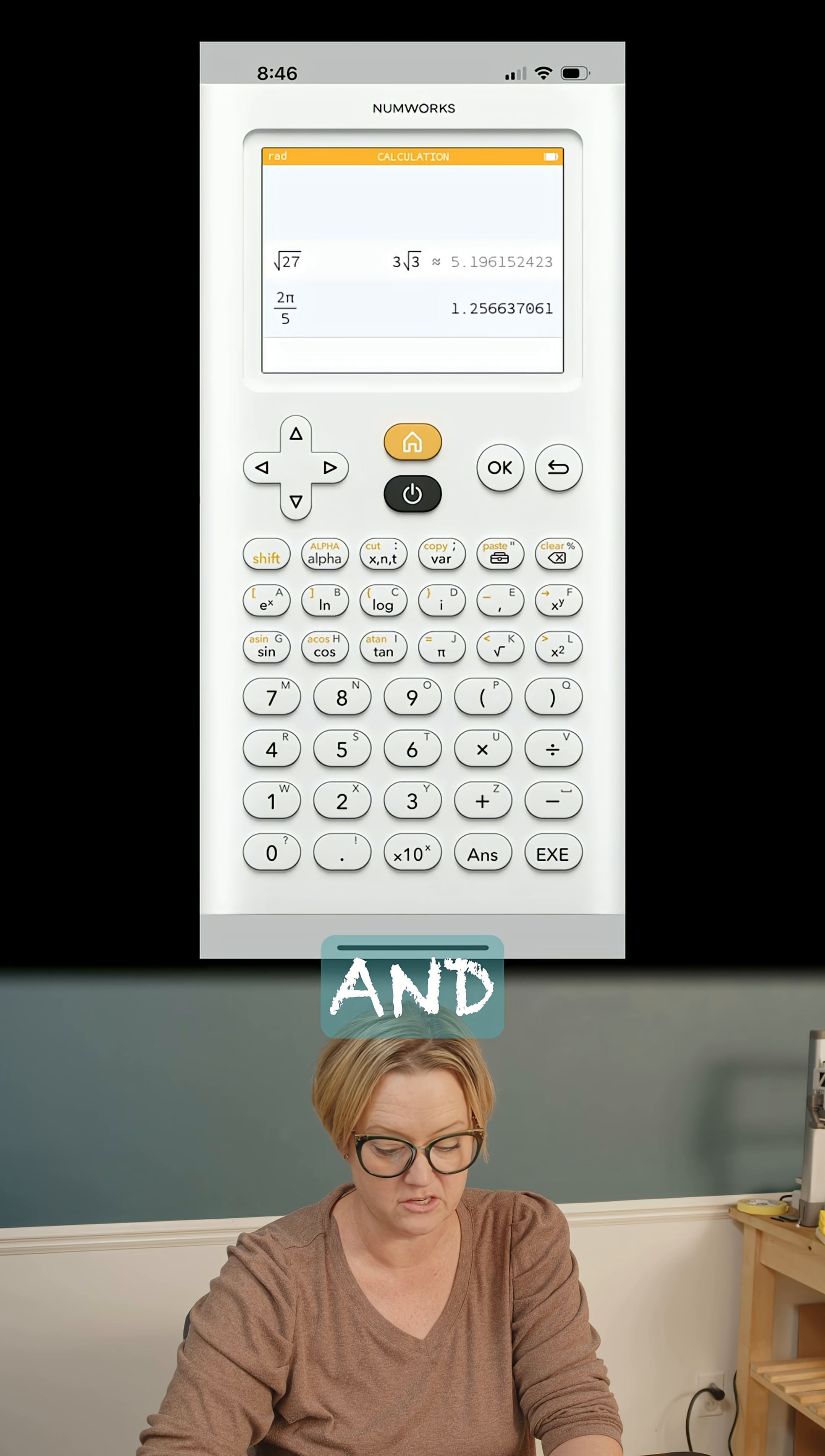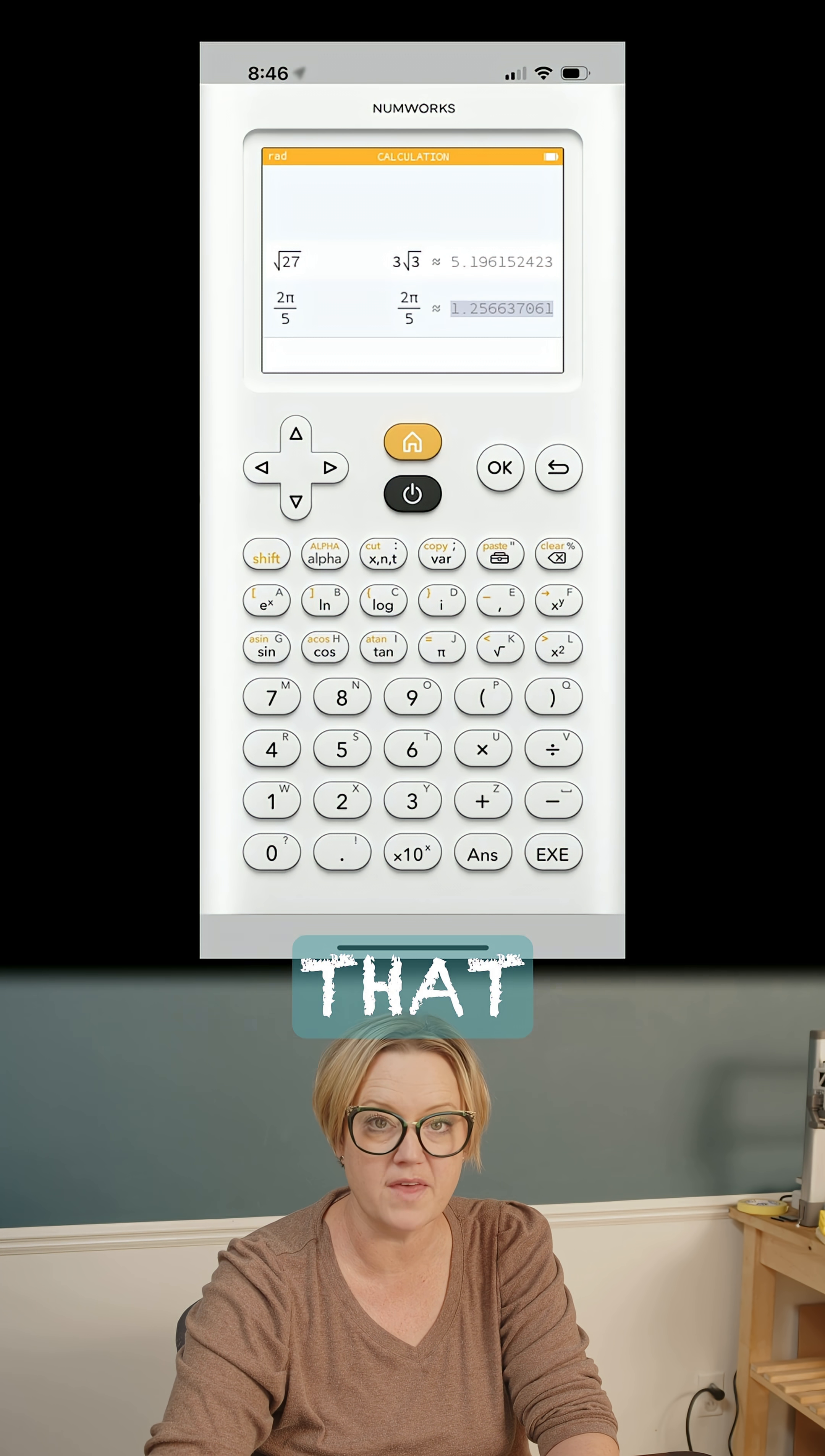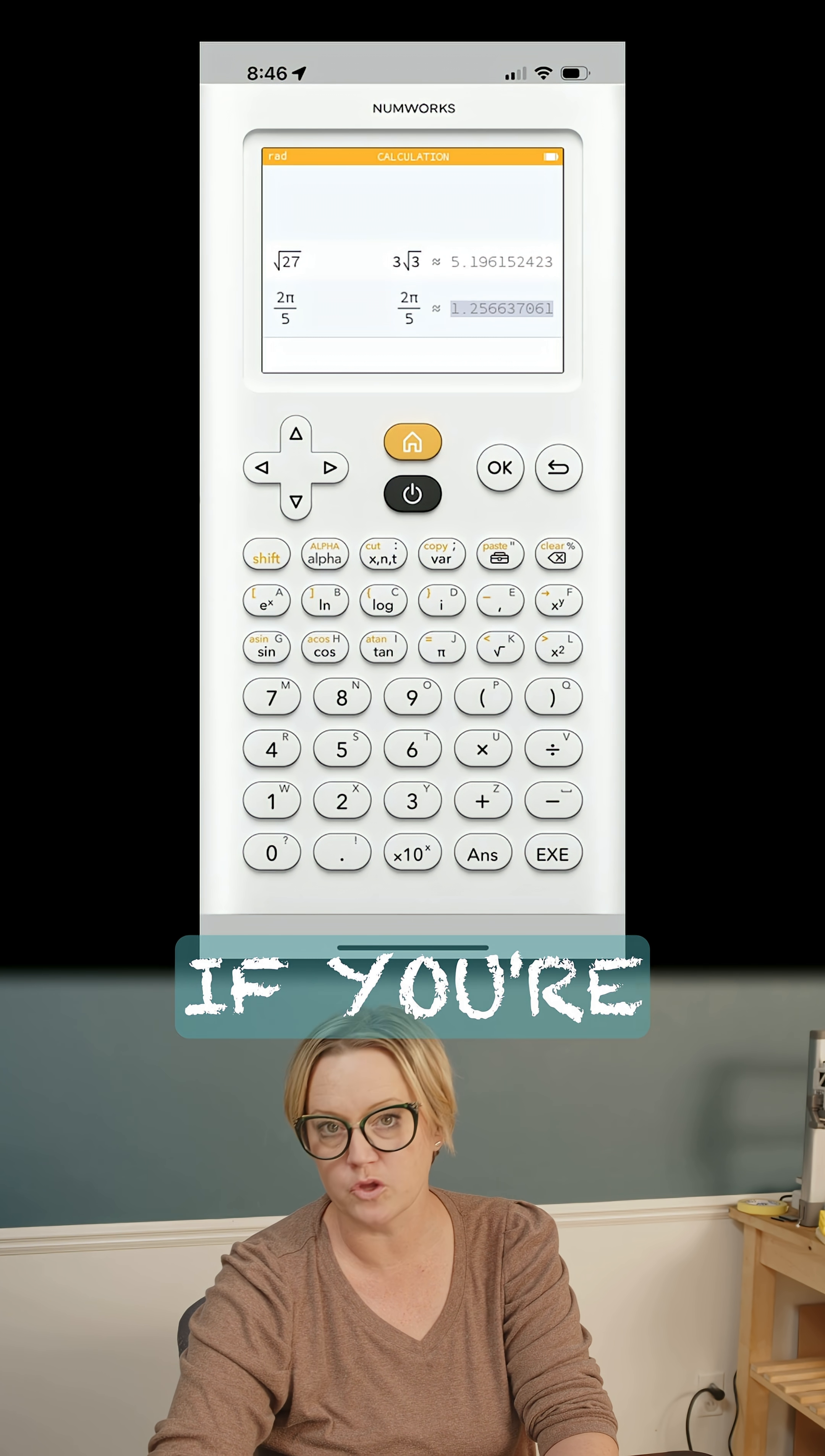Let's say you're doing something in radians and degrees. So I've got 2π over 5. It can give you that approximate value. So if you're looking for an arc length or something like that.